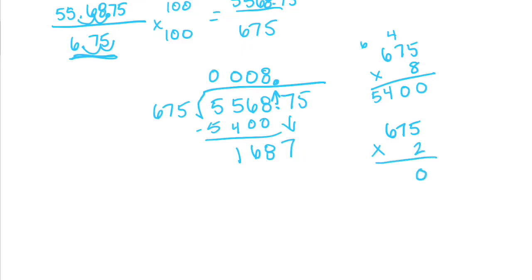675 times 2. 2 times 5 is 10. Carry the 1. 2 times 7 is 14. Plus 1 is 15. Carry the 1. 2 times 6 is 12. Plus 1 is 13. 1,350. We subtract to get 337.